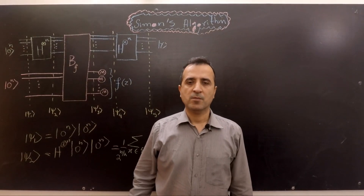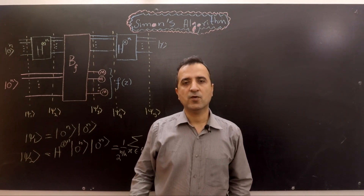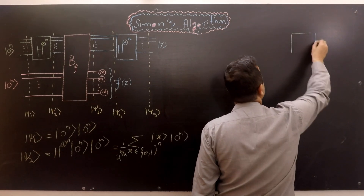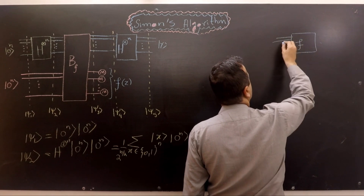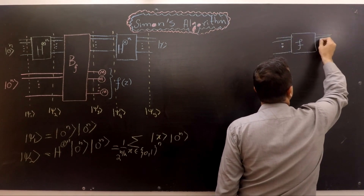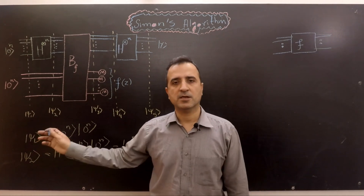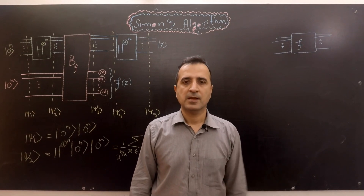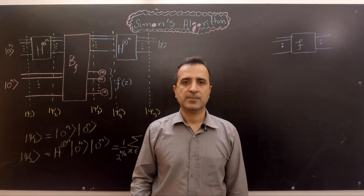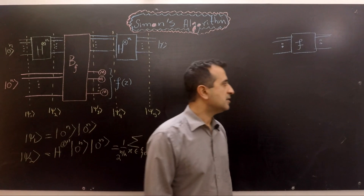Recall that in Simon's problem we have a function f. That function f is a 2-to-1 function, and it takes an n-bit string as input and produces an n-bit output. We want to use this function f in our quantum circuit. However, this function f is not unitary, and in a quantum circuit everything used must be unitary. Therefore, we have to write a unitary wrapper around that function. We call that wrapper Uf.